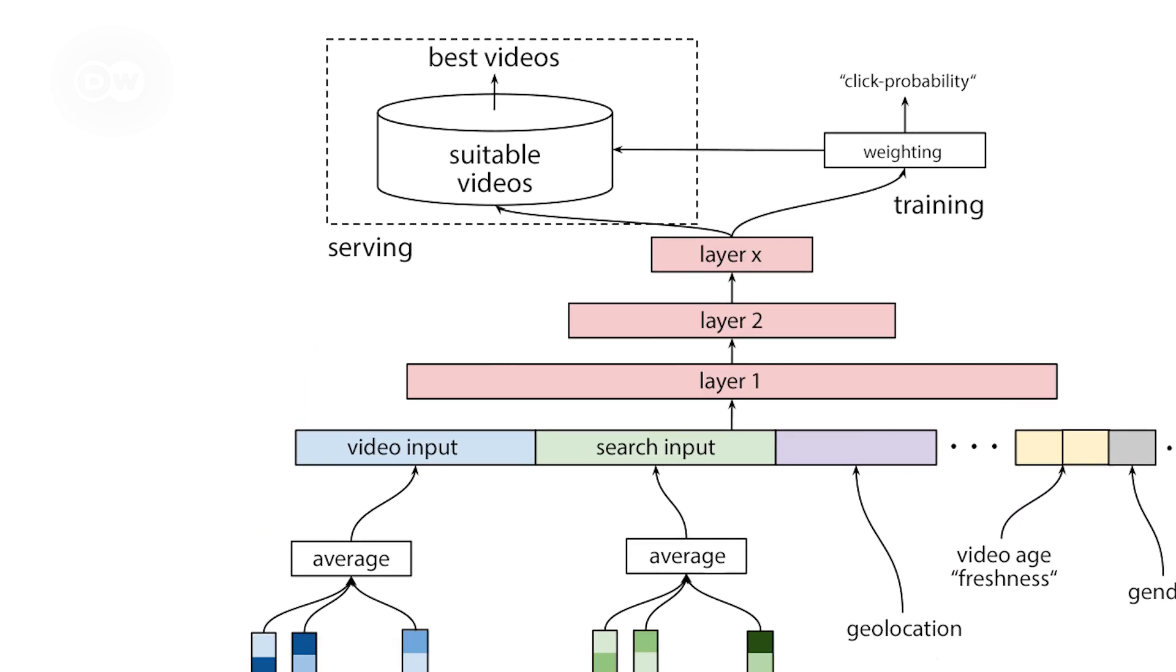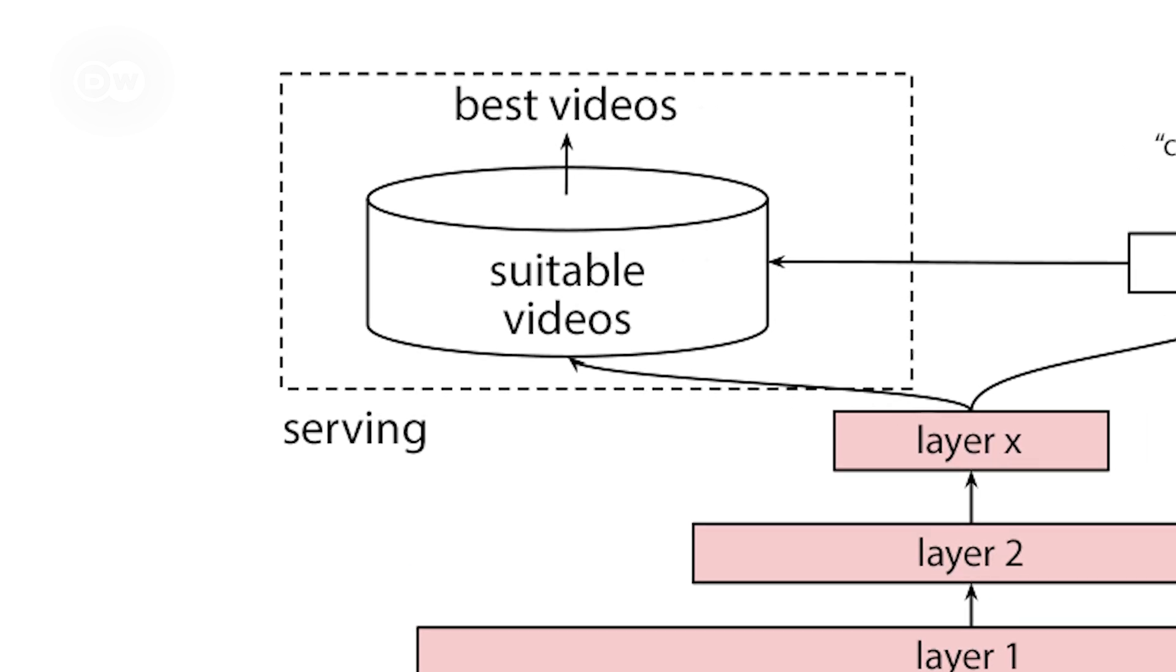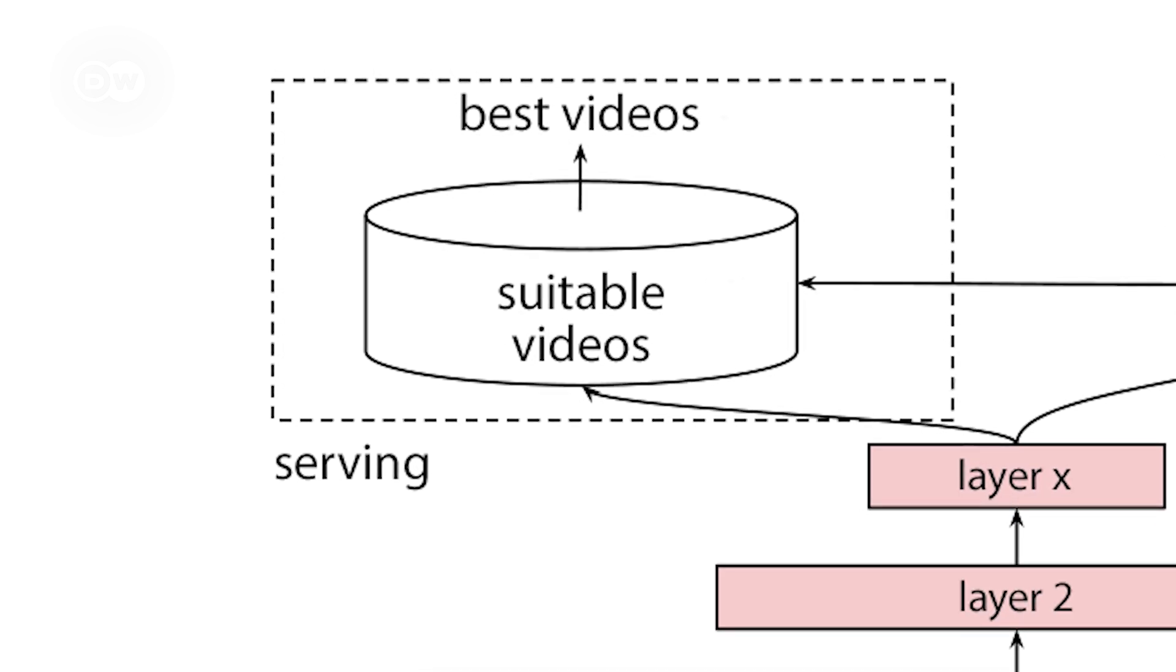But there are many other factors. And that's what makes things complicated. The factors are used to pre-select videos with the highest click probability. The system improves itself continuously with machine learning.